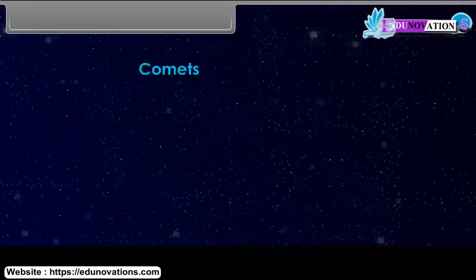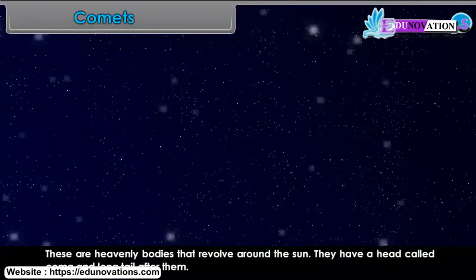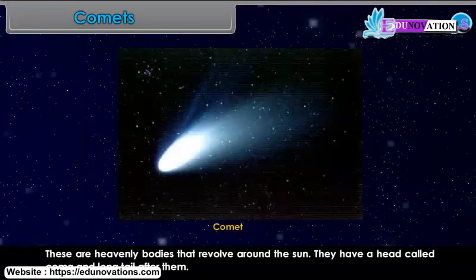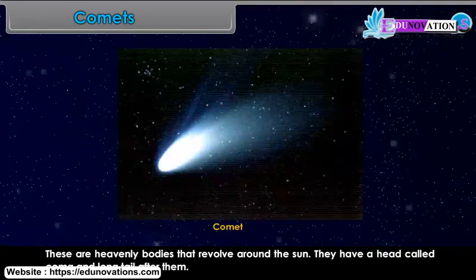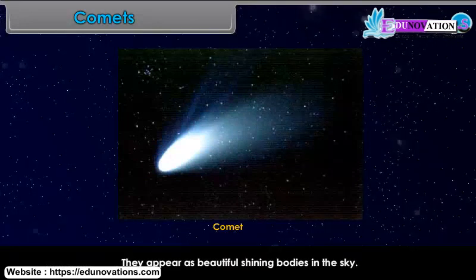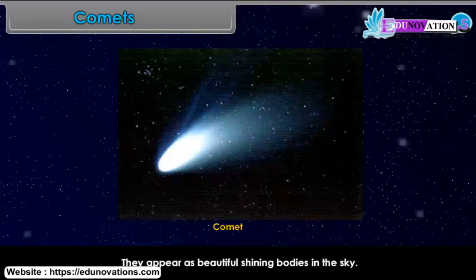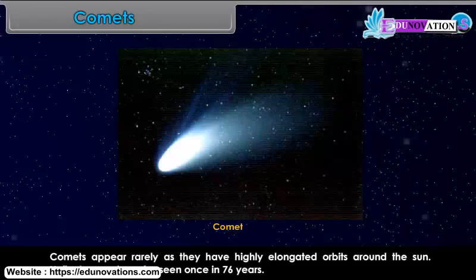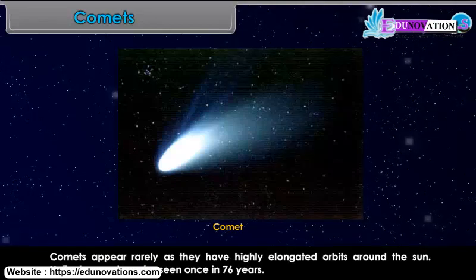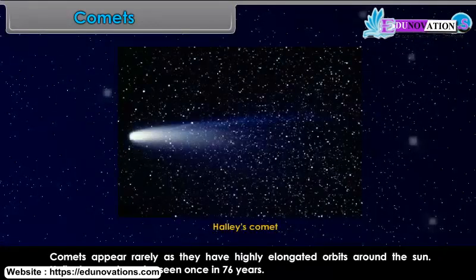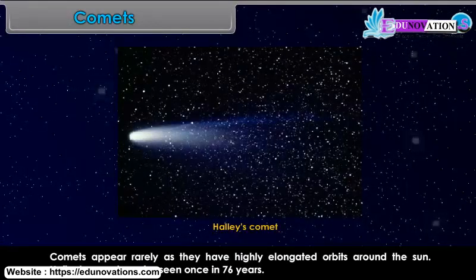Comets are heavenly bodies that revolve around the Sun. They have a head called Coma and a long tail after them. They appear as beautiful shining bodies in the sky and appear rarely because they have highly elongated orbits around the Sun. Halley's Comet can be seen once in 76 years.